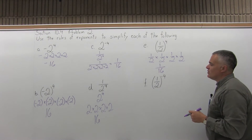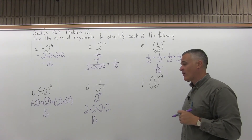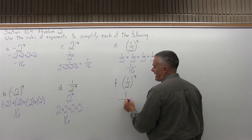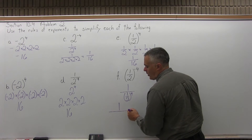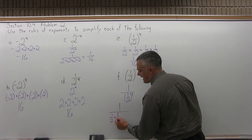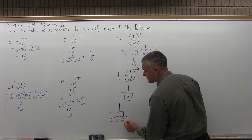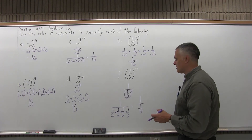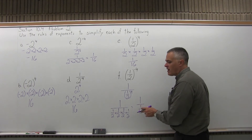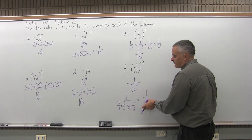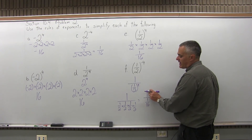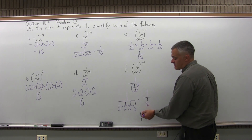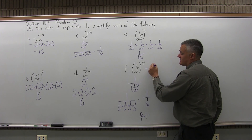Finally, Part F: 1 half to the negative fourth power. By the negative exponent rule, this is 1 over 1 half to the fourth power, which is 1 over 1 sixteenth. That's not in simplest form — when you have a fraction in the denominator of a bigger fraction, you invert the bottom fraction and multiply. Inverting gives 16 over 1, times the top which is 1. So this messy-looking expression comes out to plain old 16.